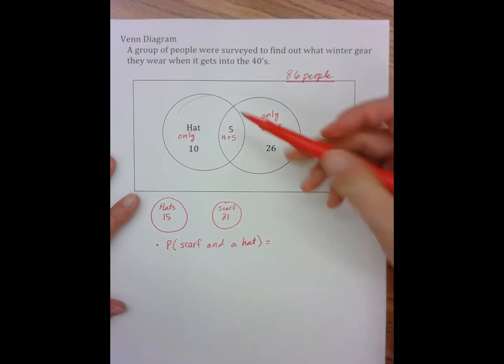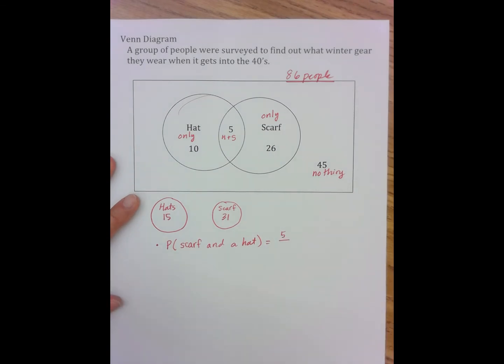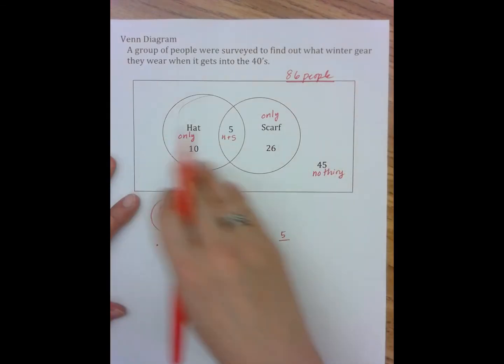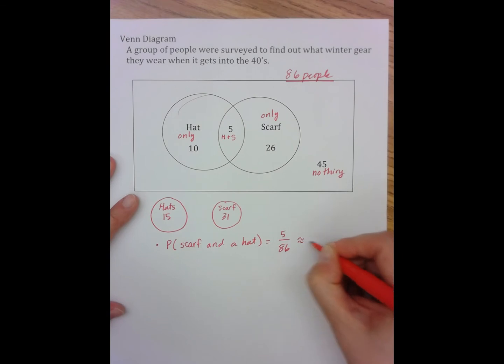So we know, as we just discussed, that 5 people wear a scarf and a hat, and that's out of the total. We're talking about how many wear both out of the total, so that's 86, which gives us approximately 5.8%.